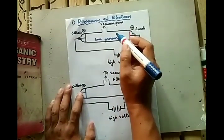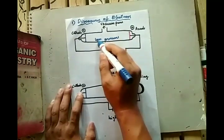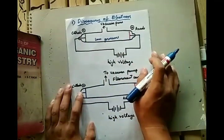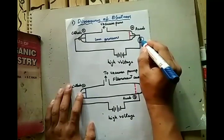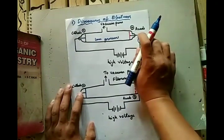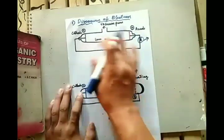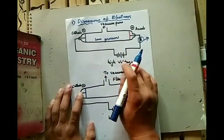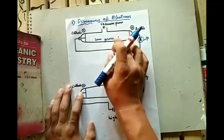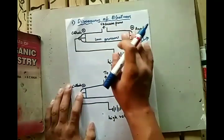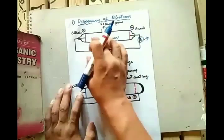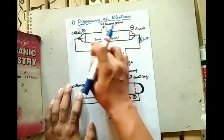They applied low pressure and high voltage and observed a flow of current. If we place an ammeter, there will be deflection, meaning there is a continuous flow of current. However, this current is not observable with the naked eye. They thought the current might flow from the cathode or anode, questioning which direction the flow was going.